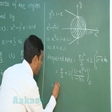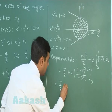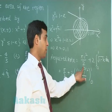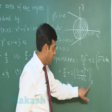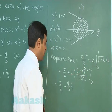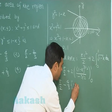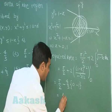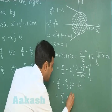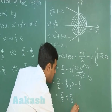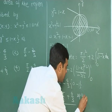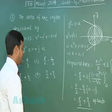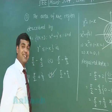Simplifying, we obtain π/2 minus (4/3) × (1 - x)^(3/2) from 0 to 1. On substituting 1, it is 0; on substituting 0, it is 1. Therefore, we obtain the required area as π/2 + 4/3 square units. Selecting from the given options, option 4 is correct.